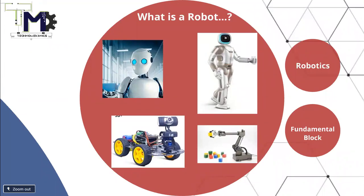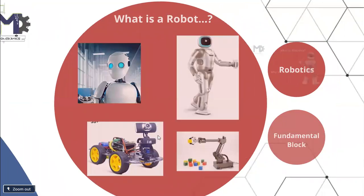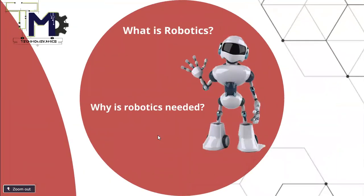Some of you may have the misconception that a big machine is considered a robot — like what we see in movies such as the Rajinikanth robot movie, or Transformers. But that's not quite right. The simplest definition of a robot is any machine that has at least one degree of freedom. A robot which can take the shape of a human is called a humanoid robot. Robotics is the study of robots, the making of robots, and working with them.